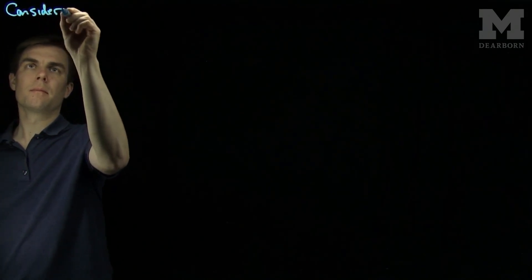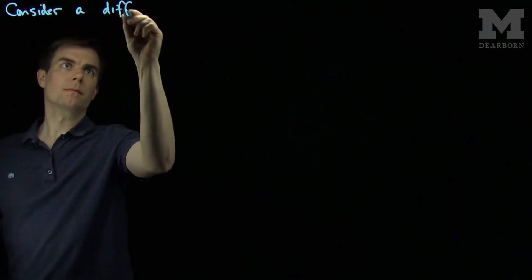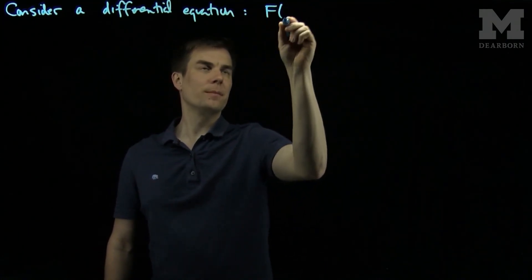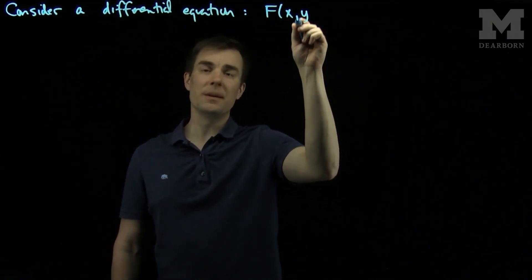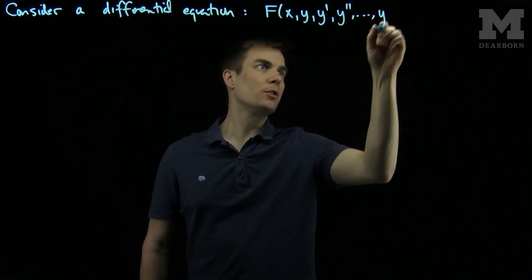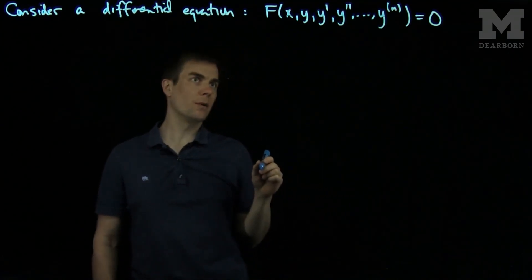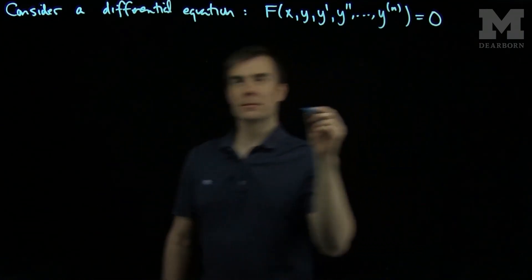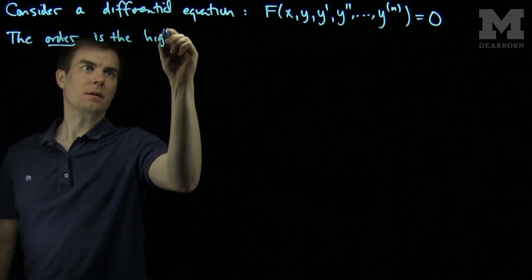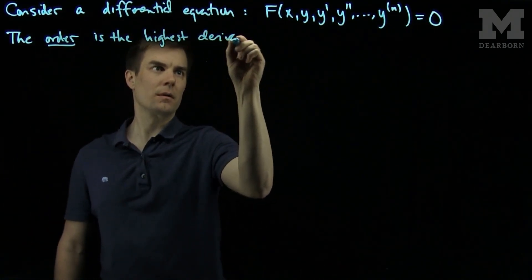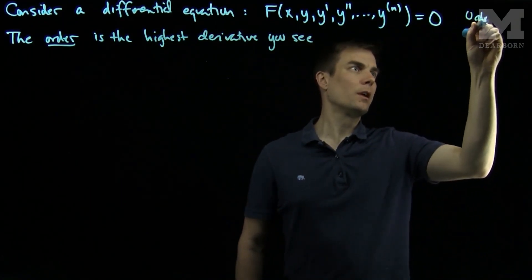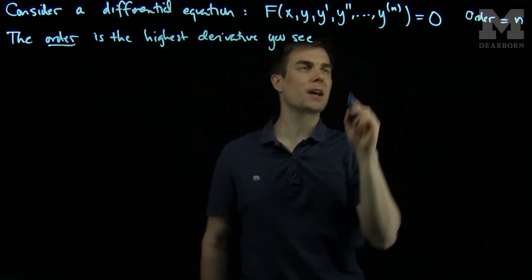Let's consider a differential equation. A differential equation is a function of the independent variable x, the dependent variable y, the derivative of the dependent variable with respect to x, and as many derivatives as you want, set equal to zero. The order of this differential equation is the highest derivative you see. So in this general case the order will be n, since n is the highest derivative.